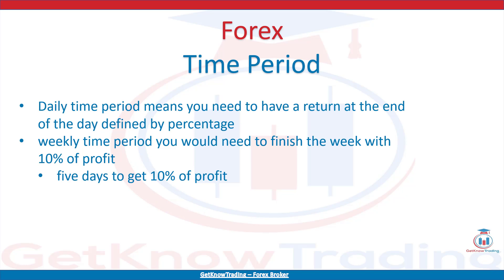Now it is time to define the time period. A daily time period means you need to have a return at the end of the day defined by the percentage. If you have set 10% as a target per day, you need to finish the trading day with 10% of profit. You can have several trades per day, with bad trades and good trades, but the final result should be 10% of profit. With a weekly time period, you would need to finish the week with 10% of profit - you have 5 days to get 10%, and can reach the target in one trade and wait the rest of the week.